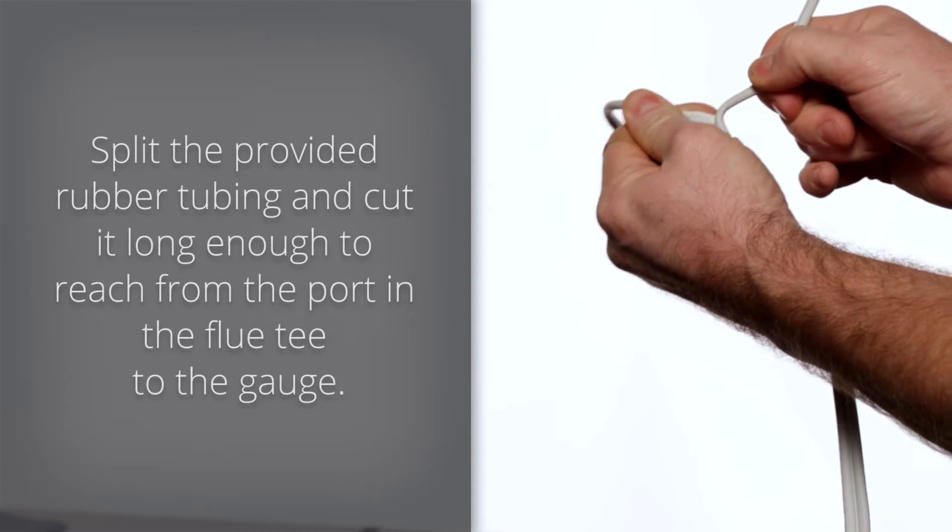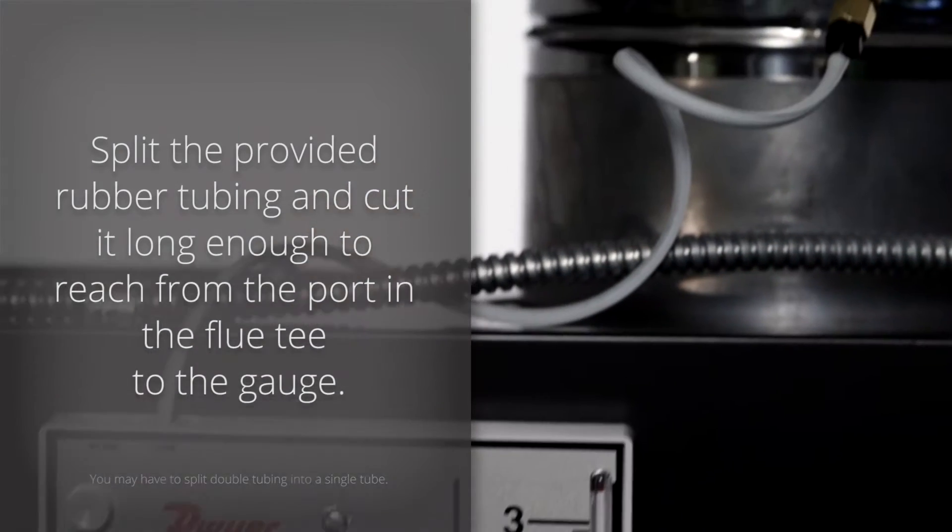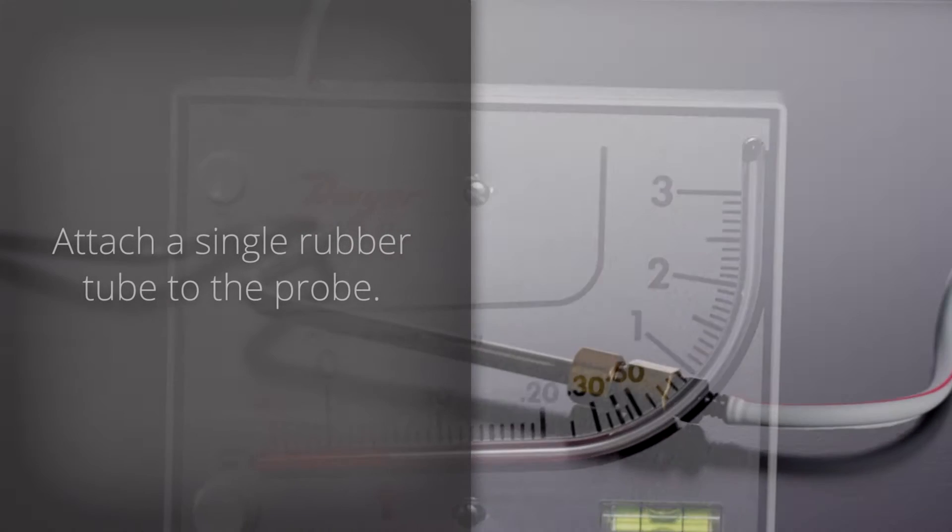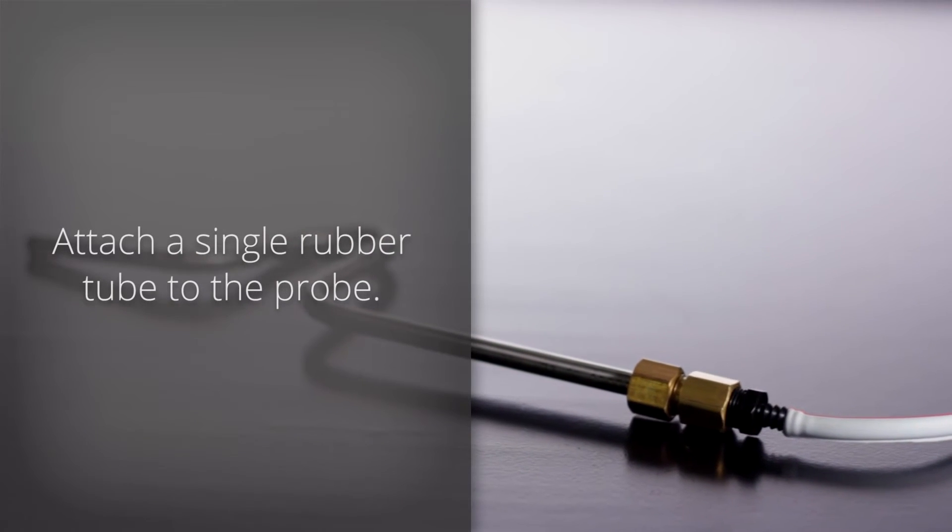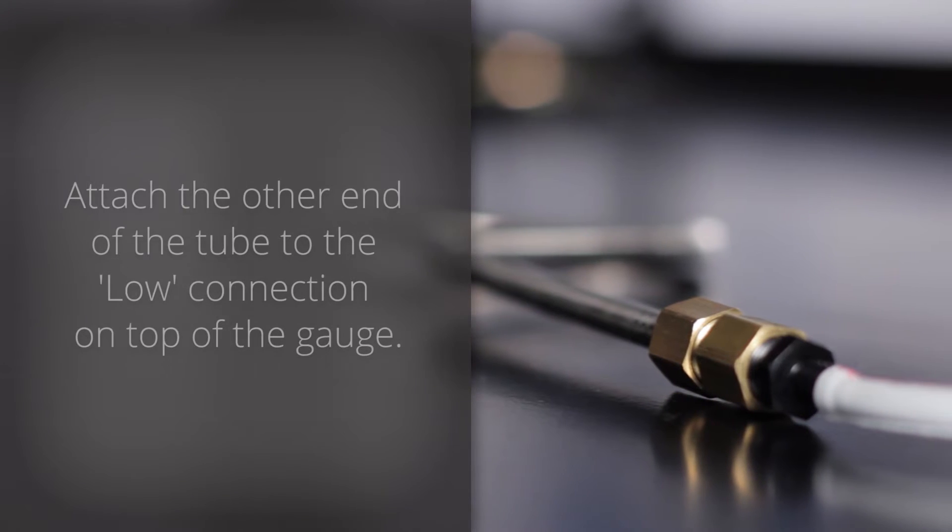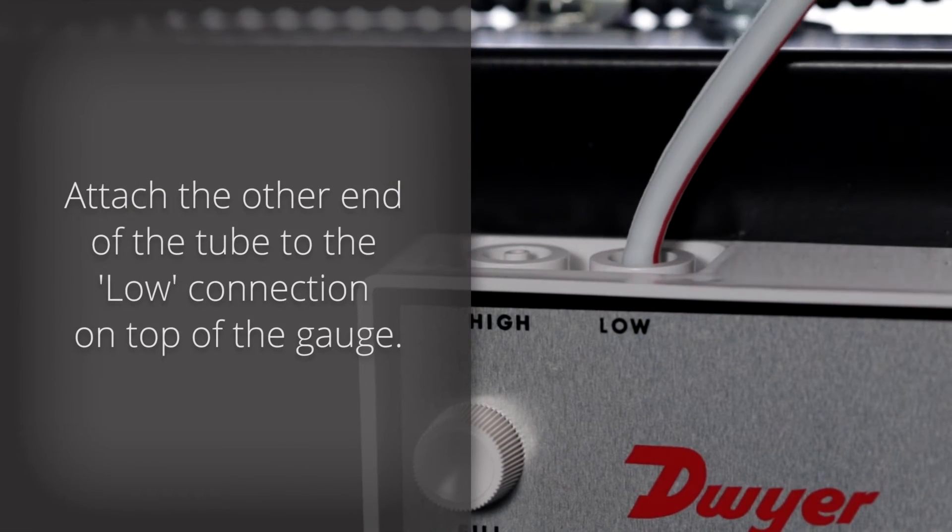Split the provided rubber tubing and cut it long enough to reach from the port in the flue tee to the gauge. Attach a single rubber tube to the probe. Attach the other end of the tube to the low connection on top of the gauge.